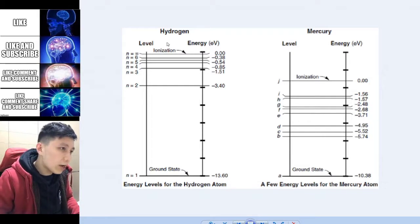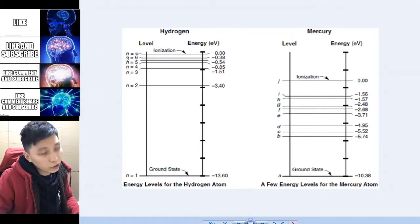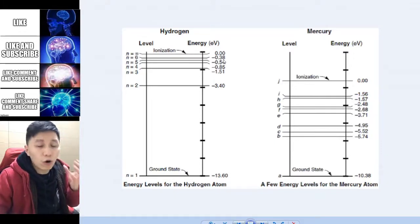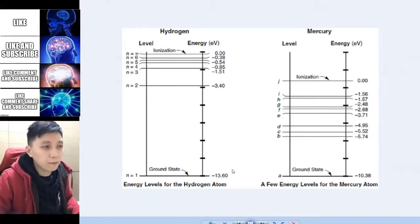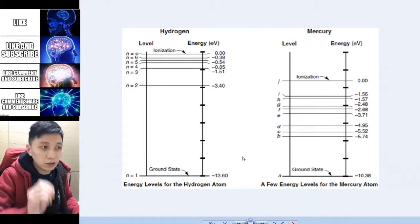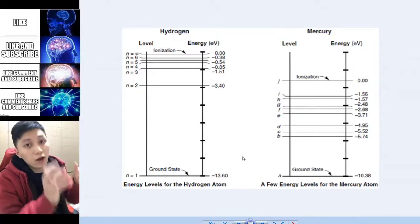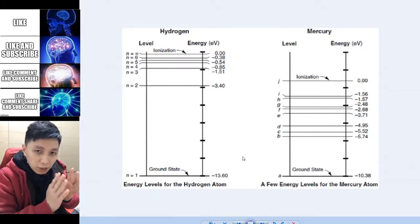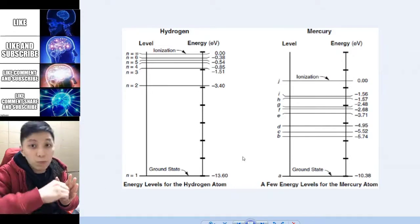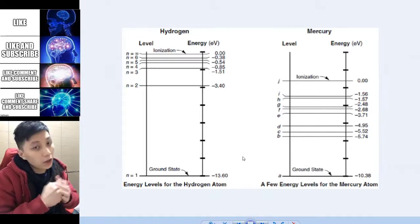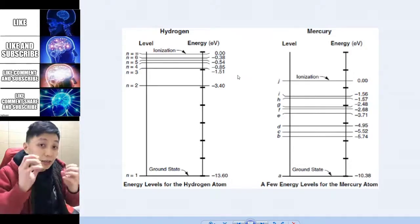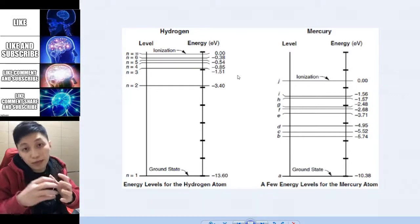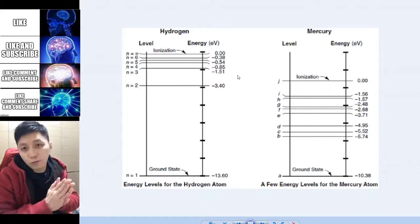By the way, when you see the word ionization here, this refers to when you reach n equals infinity — meaning you have enough energy, exactly 13.6 eV. Since the top level is zero and the ground state is -13.6 eV, the difference is +13.6 eV. If the electron receives that much energy, it will be removed — ripped off from the atom.